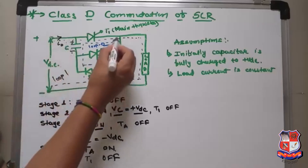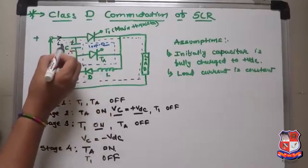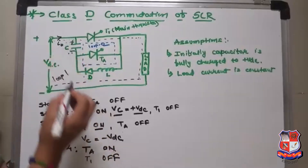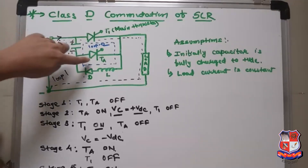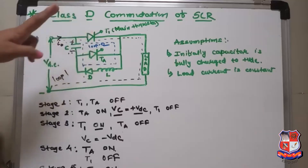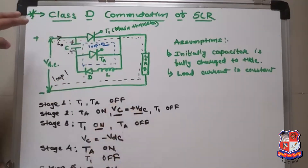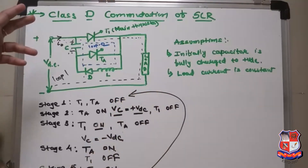After T1 is turned off, the capacitor is again charged in the positive direction — with upper plate positive and lower plate negative — through TA. In Stage 5, TA is on and Vc is again charged to plus VDC. When fully charged, the anode current through TA becomes zero and TA turns off. As both thyristors are turned off, the circuit returns to Stage 1 and the cycle repeats.